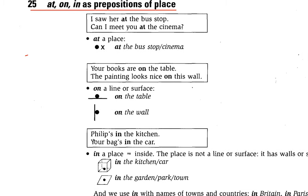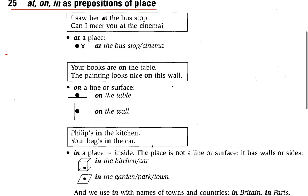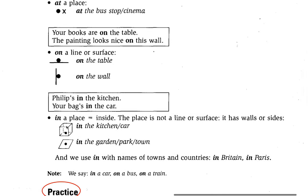Look at the column. For example, Philips is in the kitchen. Your bag is in the car. 'In' means inside a place — a place that is not a line or surface; it has walls or sides. In the kitchen, in the car, in the garden, in the park, in the town.